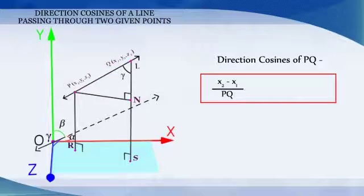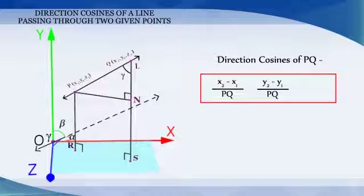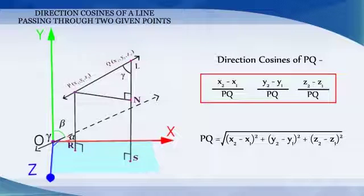(x2 minus x1) by PQ, (y2 minus y1) by PQ, and (z2 minus z1) by PQ, where PQ is equal to root over (x2 minus x1) whole square plus (y2 minus y1) whole square plus (z2 minus z1) whole square.